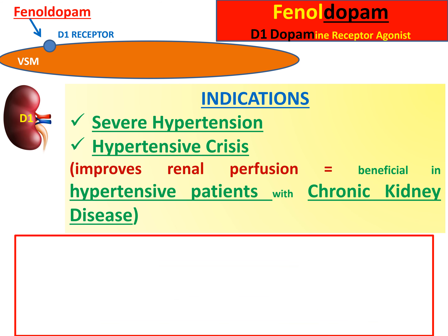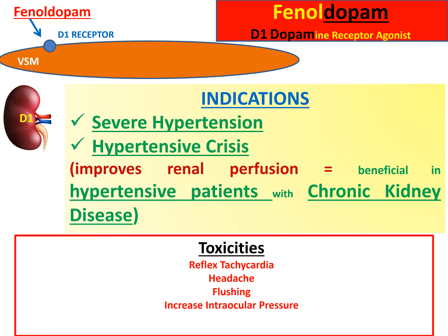Side effects and toxicity of fenoldopam include reflex tachycardia, headache, flushing, and increased intraocular pressure. Therefore, do not use it if the patient has glaucoma.